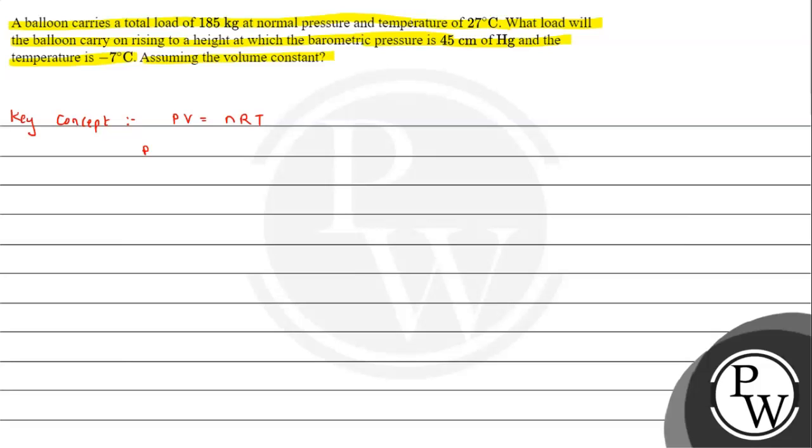We can write PV equals n, that is number of moles, mass upon molecular mass, into R into T. Mass upon volume is what? Density. So P into M will be equals to rho into R into T.